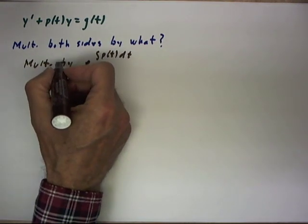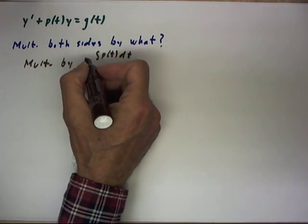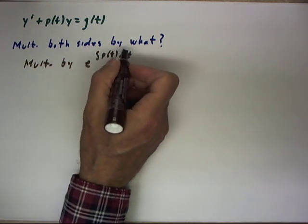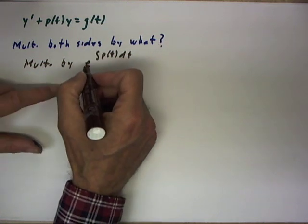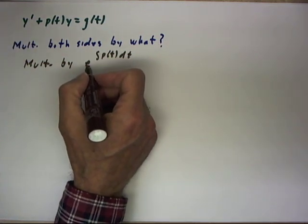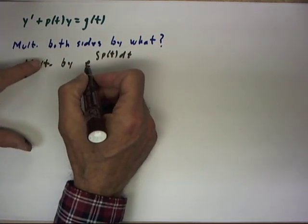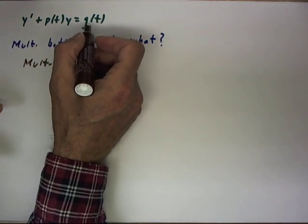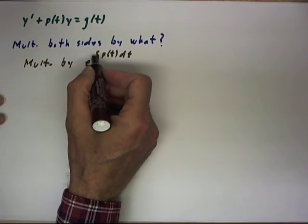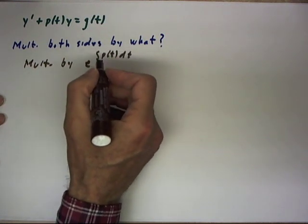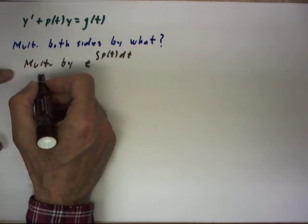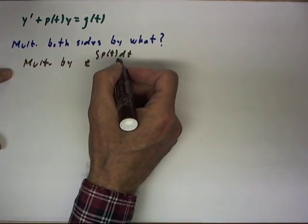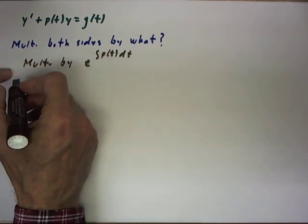Now, in solving the homogeneous equation, we use the integral e to the negative integral p of t dt, and we use that as our y function. In this case, we're doing something different. We're trying to solve the non-homogeneous equation, and we're going to multiply by e to this integral — the preceding clips should have demonstrated why that is. In any case, this is what we do.